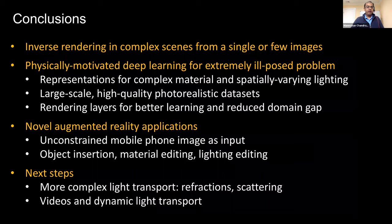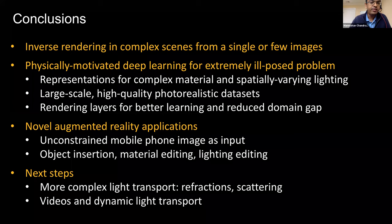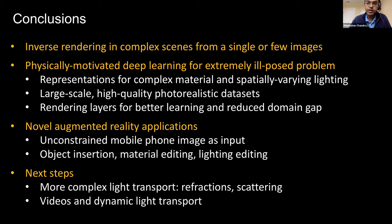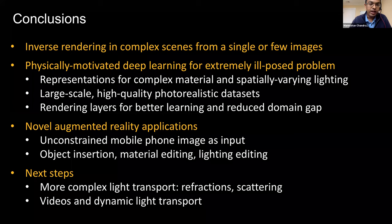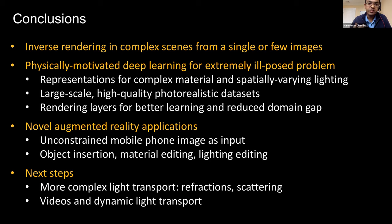In conclusion, we looked at inverse rendering in complex scenes using a single image or a few images for refractive light paths. We presented physically motivated networks to solve this extremely ill-posed problem, with representations handling complex spatially varying material and lighting. We created large-scale photorealistic datasets with high-quality ground truth and rendering layers that improve learning and reduce domain gap, enabling novel AR applications like object insertion and material editing. As next steps, we are working on editing light sources, more complex light transports like volumetric scattering, video input for temporal consistency, and dynamic light transports.